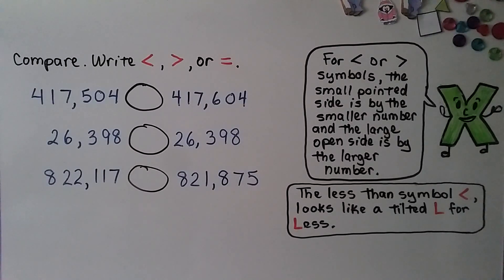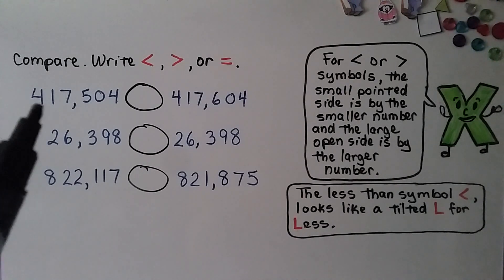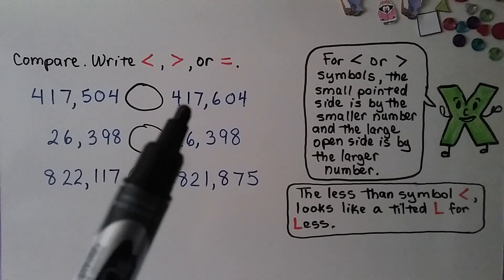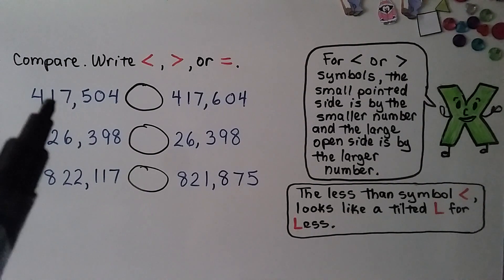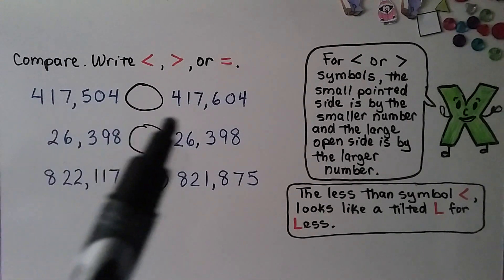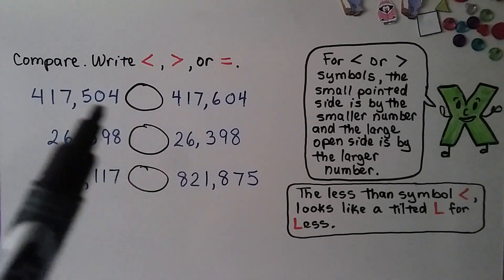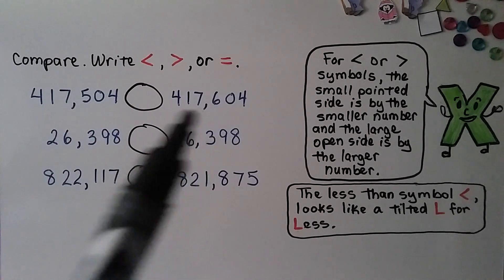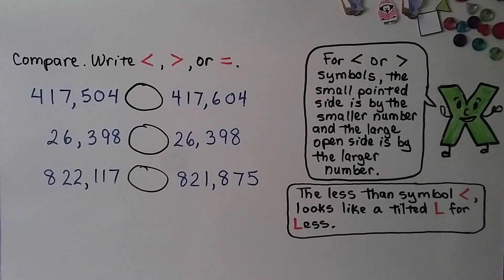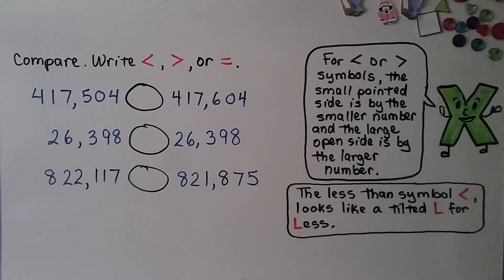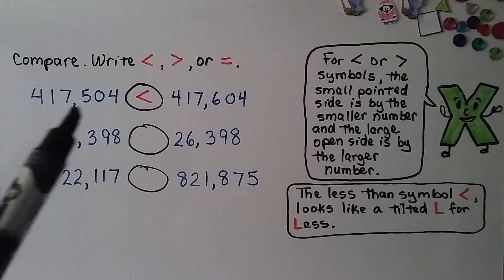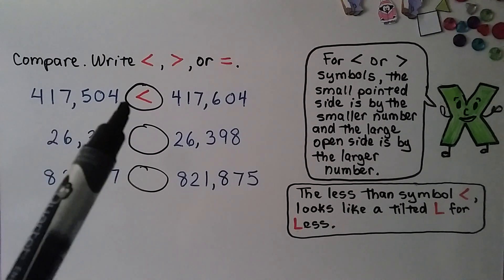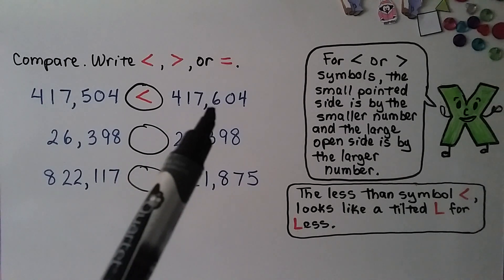We need to compare these numbers and write less than, greater than, or equal to. This number starts with a 4 in the hundred thousands place — so does this one. A 1 in the ten thousands — same. A 7 in the one thousands — same. We move to the hundreds place: this has a 5, this has a 6. So 417,504 is less than 417,604.